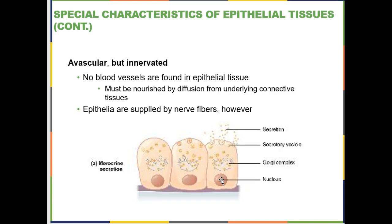Epithelia are also avascular, which means they do not have blood vessels. So if you scratch your skin and it doesn't bleed, you've just disturbed the epithelium. If you scratch your skin and it does bleed, you've gone through the epithelium into the connective tissue underneath it where you find the blood vessels. You do find nerve fibers in epithelia — when we get to skin there are specialized neurons that live in the epithelium of your skin that give you sensation.